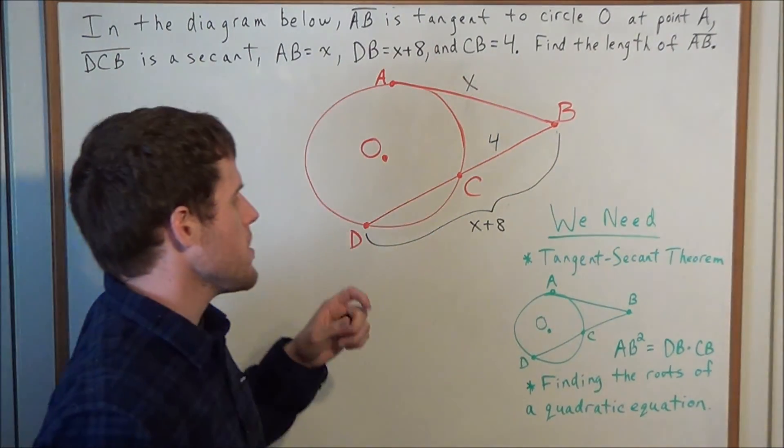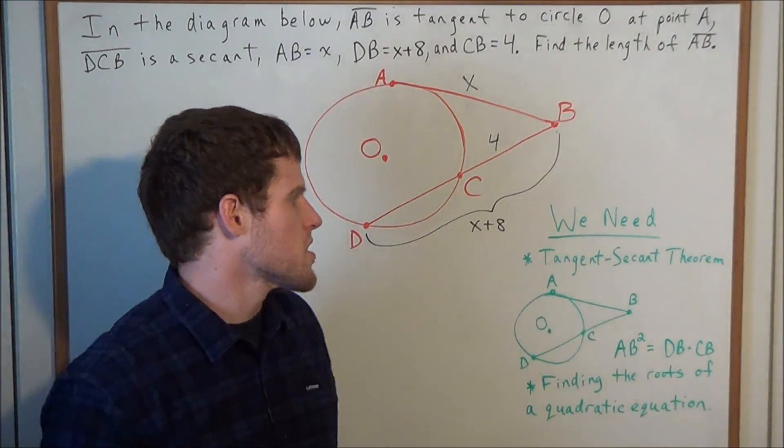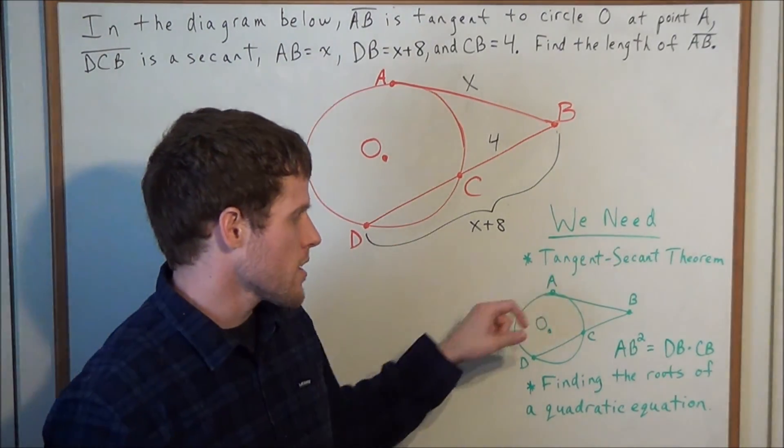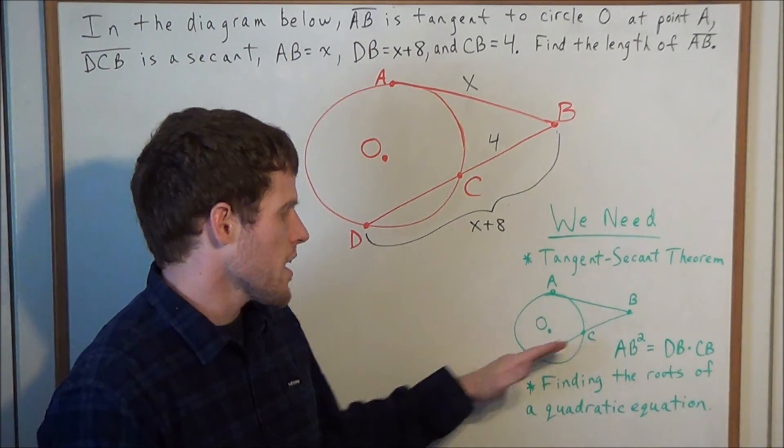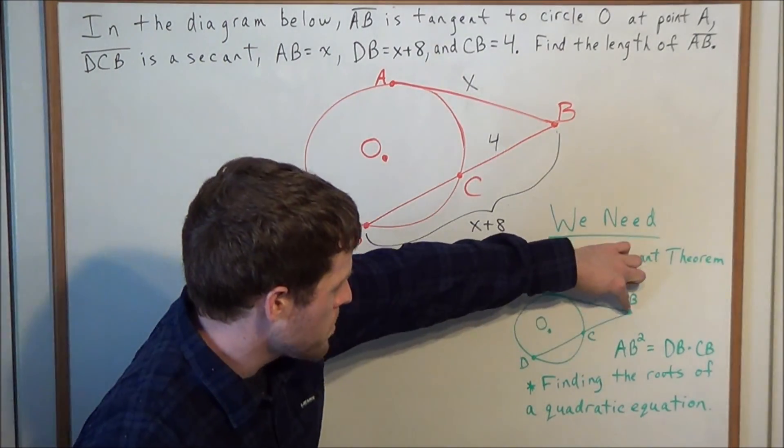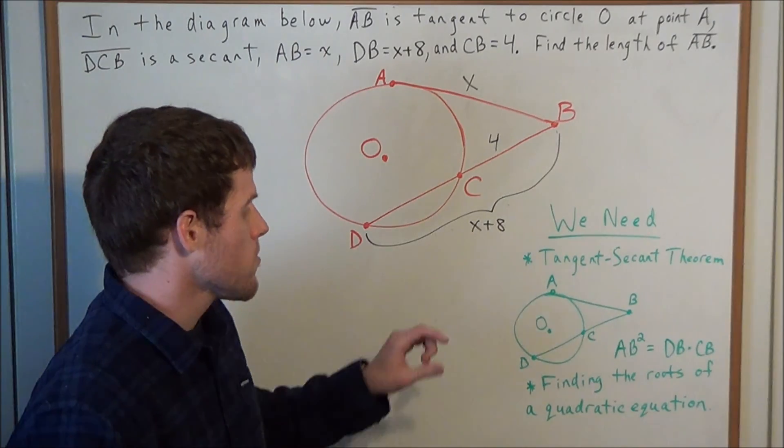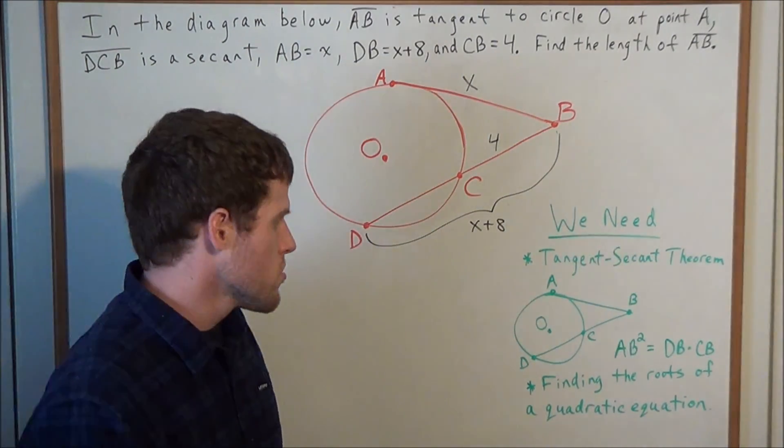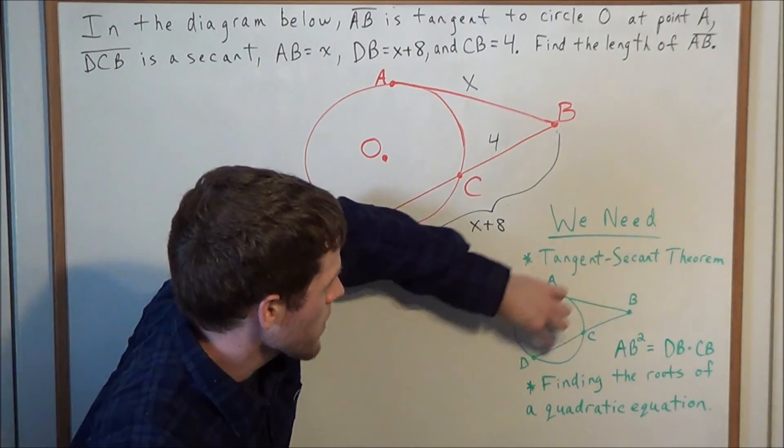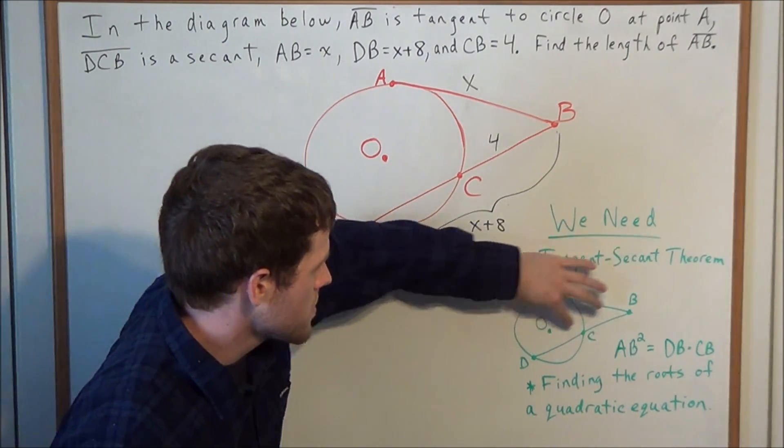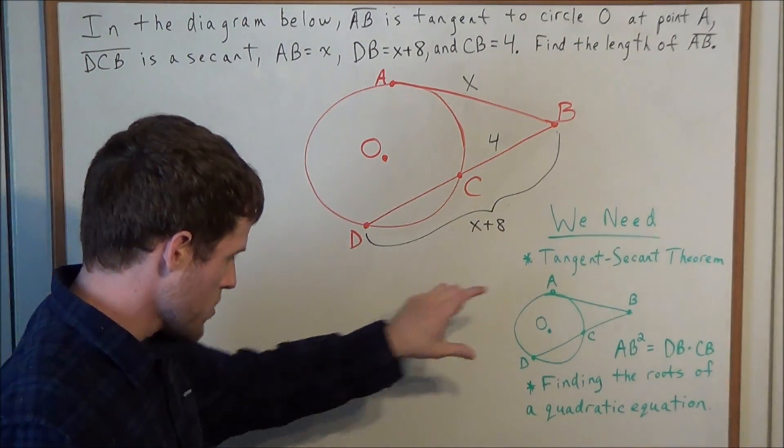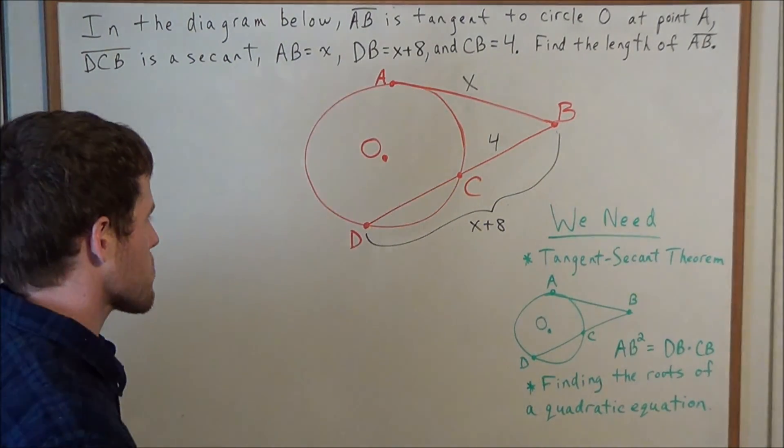So now we bring our attention over to the tangent secant theorem. When we have some circle O, and we have a tangent line segment intersecting a secant line segment at some point B outside the circle, well then the length of the tangent line segment squared is equal to the length of the secant segment times the length of the outer segment, which gives us DB times CB equals AB squared. So now if we use this theorem in the context of this problem...